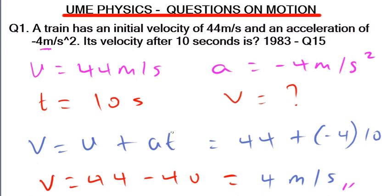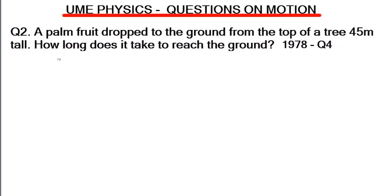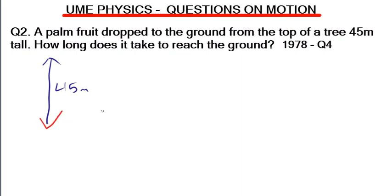The second question says: a palm fruit is dropped from the top of a tree 45 meters high — how long does it take to reach the ground? Since the palm fruit was dropped and not thrown, our initial velocity u equals zero. We are going to find our time t — the time it takes to reach the ground.